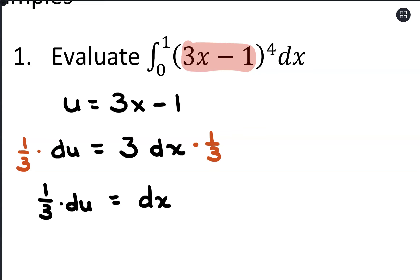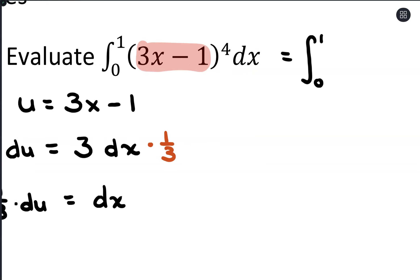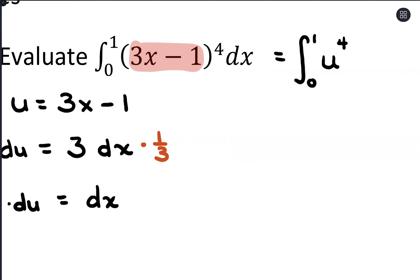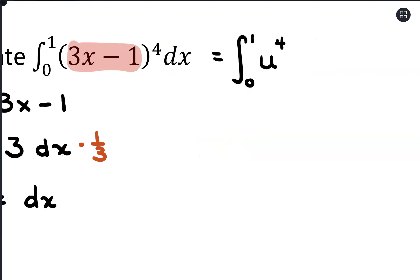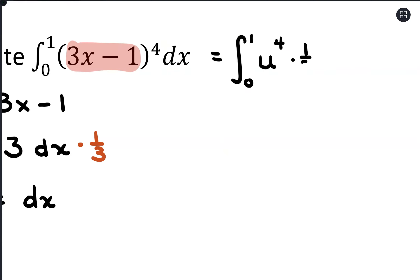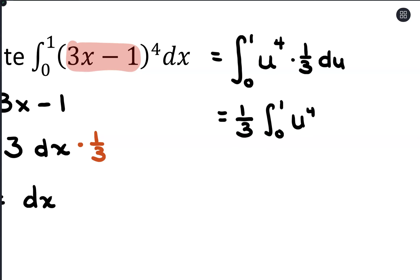Making our substitution, we're taking the integral from 0 to 1. For 3x minus 1, we're going to substitute u in, and then we have this exponent of 4. And where we have dx, we're going to have 1/3 du. I'll just have that 1/3 come out front, and then the antiderivative from 0 to 1 of u to the 4th du.